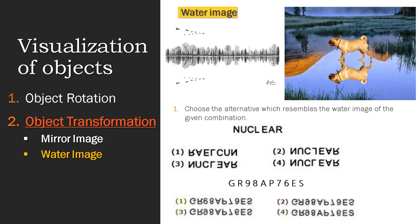Now let's see water image. Water image is a reflection where the top and bottom parts of the image are changed, while the left and right sides remain the same. In example 1, the birds are on the left side and at the top of the image. In the water image, the same birds appear at the bottom of the image while remaining on the left side.